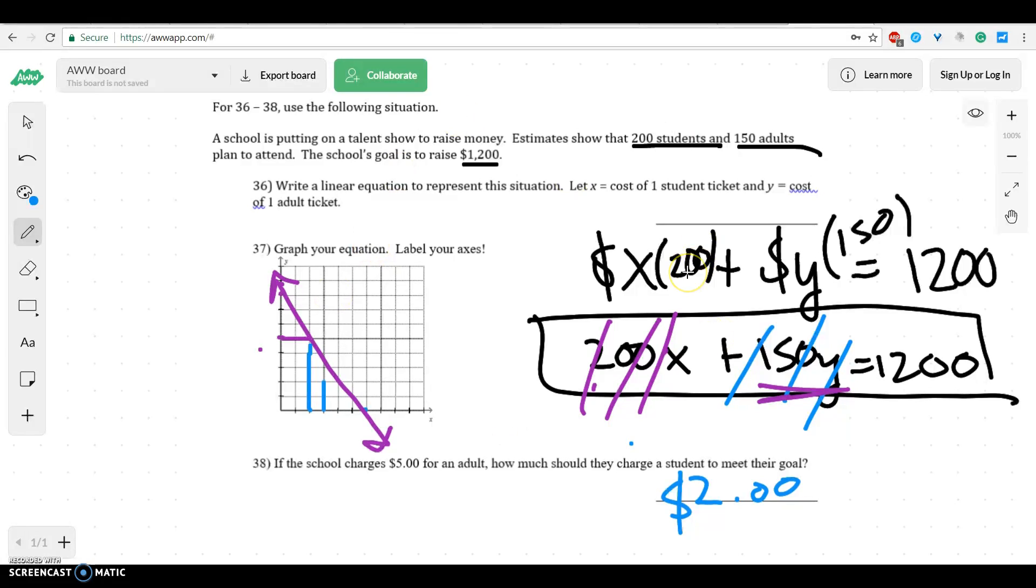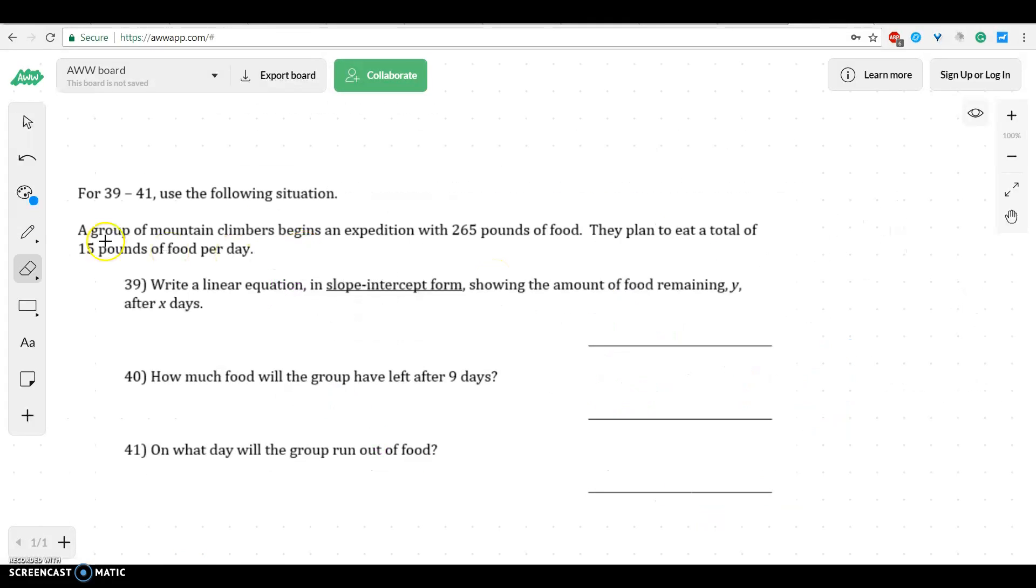That was a little bit of a harder word problem. You guys probably won't have one that is that tricky for the test, but it is a good one to think about. Let's do one more. It says, a group of mountain climbers began their expeditions with 265 pounds of food. They plan to eat a total of 15 pounds of food per day. Write a line equation. Well, they gave us two really important pieces of information. They gave us how much they started with, so we know that's the y-intercept.